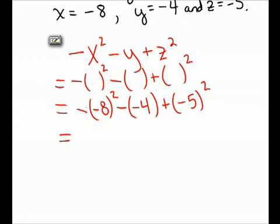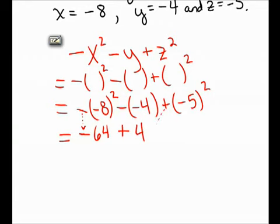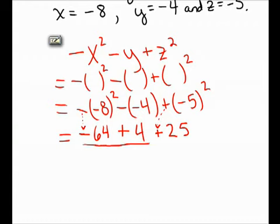In the first term, I have negative negative 8 squared. The quantity negative 8 squared means negative 8 times negative 8. There's still a negative out front, but negative 8 squared is positive 64. Subtracting a negative becomes adding 4. And the quantity negative 5 squared is negative 5 times negative 5, so it's positive 25. So I need to calculate negative 64 plus 4 plus 25, which comes to negative 35.